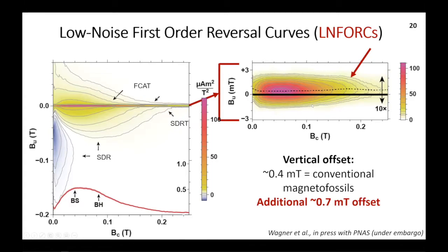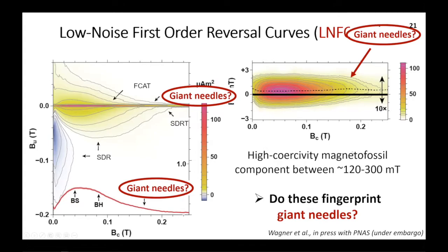The exceptional signal-to-noise ratio allowed us to look at the central ridge in greater detail. In a zoom-in of the central ridge with vertical exaggeration, B_U equals zero is highlighted by a bold black line, and the actual vertical offset of the central ridge is shown by a dashed line above. Over the range for conventional magnetofossils, we see the classic ~0.4 mT offset. But once we reach the higher coercivity component, there's an additional 0.7 mT offset. So we have signatures characteristic of magnetofossils, but outside the range for conventional magnetofossils.